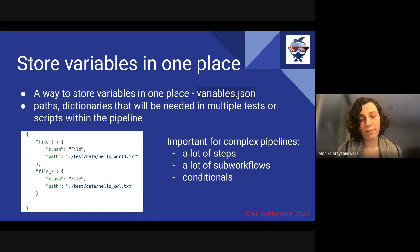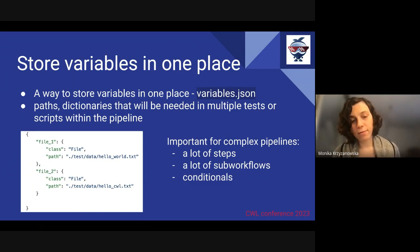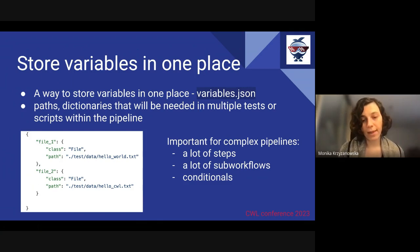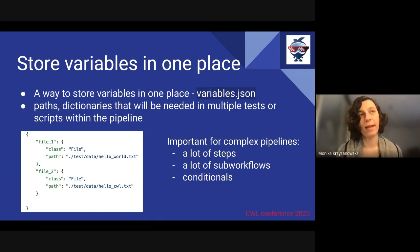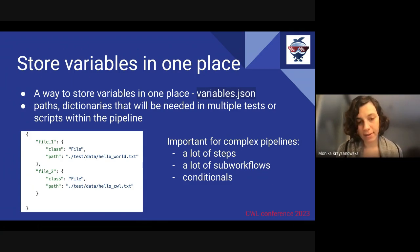Imagine if you have a CWL workflow pipeline that is very complex, contains a lot of steps, sub-workflows and conditionals. In bioinformatics there are inputs like a reference genome that will likely appear in every sub-workflow. So instead of defining this in every place, you can store it in the JSON file and simply import it.